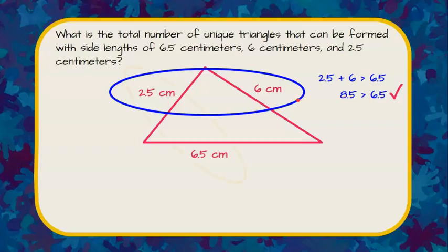Now we need to do two more. So let's do these two sides. So these two sides 2.5 and 6.5 must be greater than that third side which is 6. 2.5 plus 6.5 is 9 and 9 is greater than 6 so it checks.